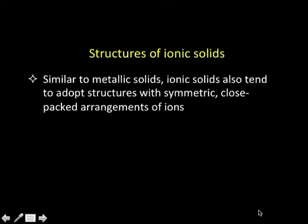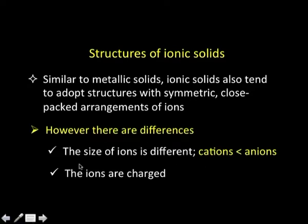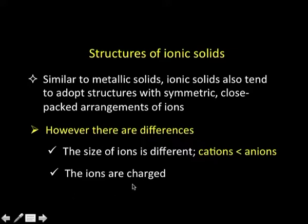Let us move further and come down to the structure of ionic solids. Similar to metallic solids, ionic solids also tend to adopt structures with symmetric close packed arrangements of ions. In case of metallic solids we had atoms packing together, and in case of ionic solids we have ions. When you try to pack ions, two things become different. Firstly, the size of ions is different — in metallic solids all atoms are identical, whereas in ionic solids the two ions constituting the ionic solid are of different sizes; typically cations are smaller than the anions. Secondly, the ions are charged species, which is a very significant difference, because in metallic solids they are electrically neutral atoms, whereas here we have charged particles.